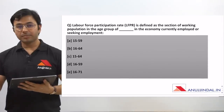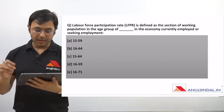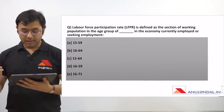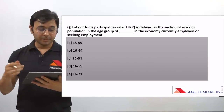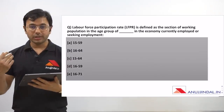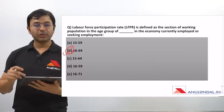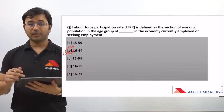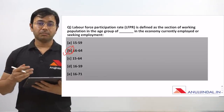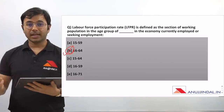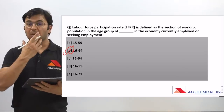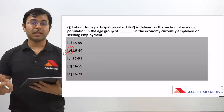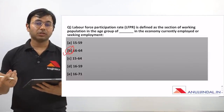The next question is connected with the previous one. LFPR is defined as the section of the working population in the age group of what — in the economy currently employed or seeking employment? The answer is B: 16 to 64 years of age. There are very high chances this question will be asked in Phase 1 of the upcoming NABARD examination, as LFPR was recently declared by NSSO to be well below previous years' LFPRs, though the government has not yet finalized the report.